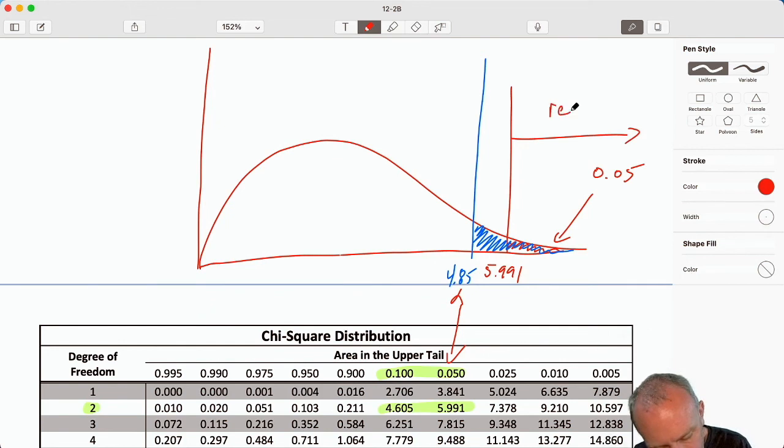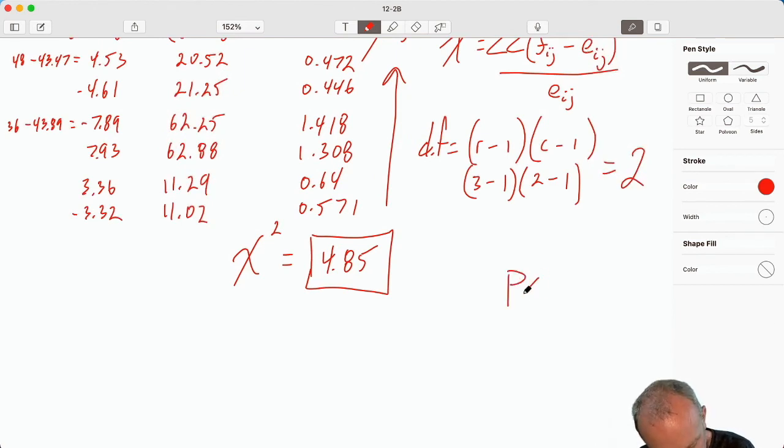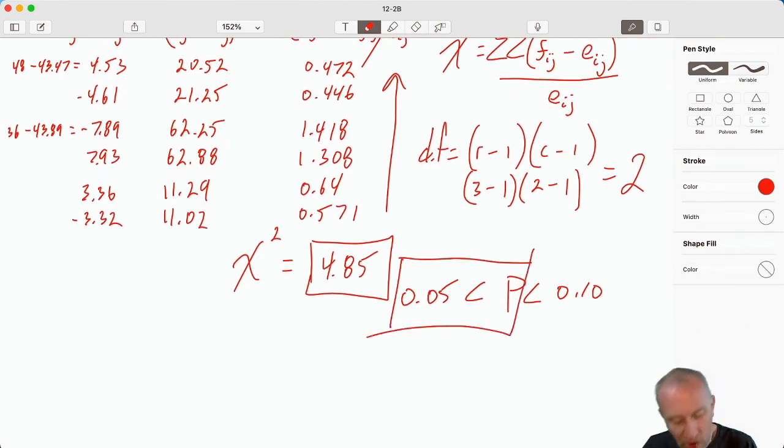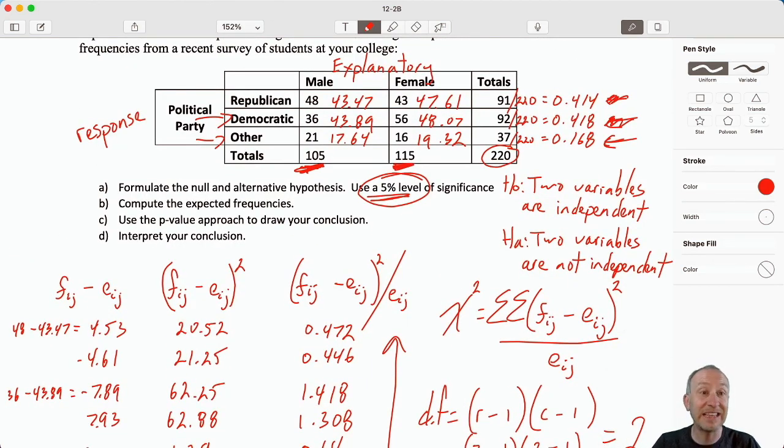So much of this, after all of the tests that we have done, should just be second nature for you at this point. Applying that critical value rejection rule, applying the p-value rejection rule. Here I can see clearly that we do not reject that null hypothesis. Our p-value is less than 0.1 but greater than 0.05. If we're doing this at the 5% level of significance, then knowing that my p-value is greater than 0.05, we do not reject. We therefore have insufficient evidence to show that there is any lack of independence. In other words, our data supports the null hypothesis. We have reason to believe that our two variables, gender and political affiliation are, in fact, independent.